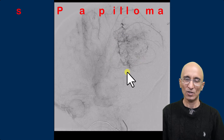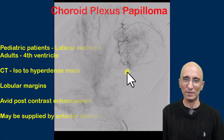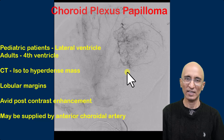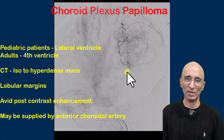This constellation of findings is consistent with choroid plexus papilloma, which in pediatric patients is commonly seen in the lateral ventricle — more so in the left lateral ventricle than the right lateral ventricle. In adult patients, choroid plexus papilloma is commonly seen in the fourth ventricle.